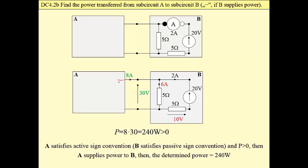Then the power of this voltage source, this power is equal to the power supplied or absorbed by subcircuit B from power balance. This power is positive, 240 watts. 8 multiplied by 30 is positive.